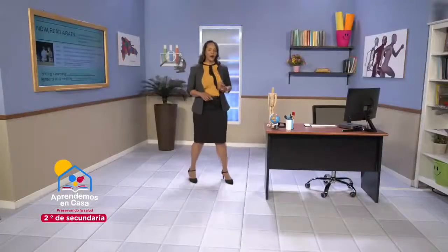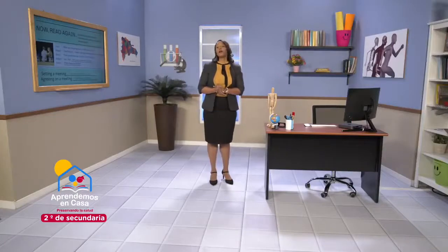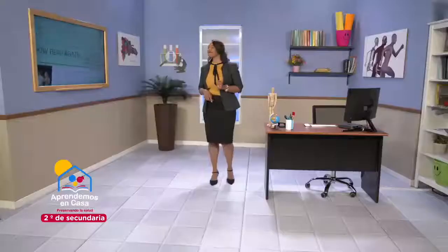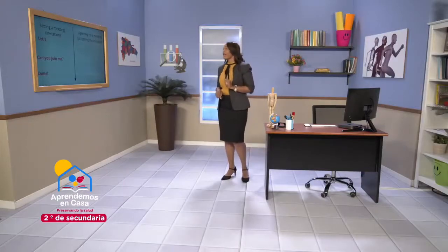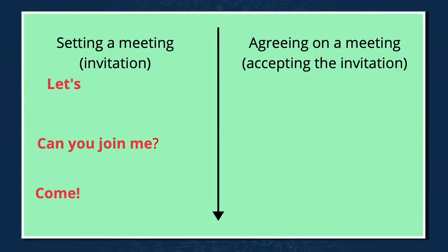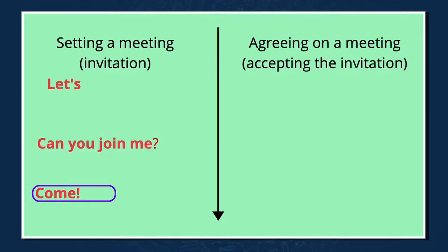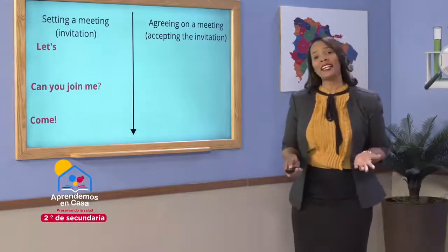When I want to set a meeting — cuando yo quiero programar un encuentro con alguien — I usually make an invitation which the other person can agree or not agree to. During this class, you're going to learn three expressions to help you set a meeting and agree on one with friends and family. When you want to set a meeting, you can use one of these three expressions: 'Let's', 'Can you join me?', or 'Come'.